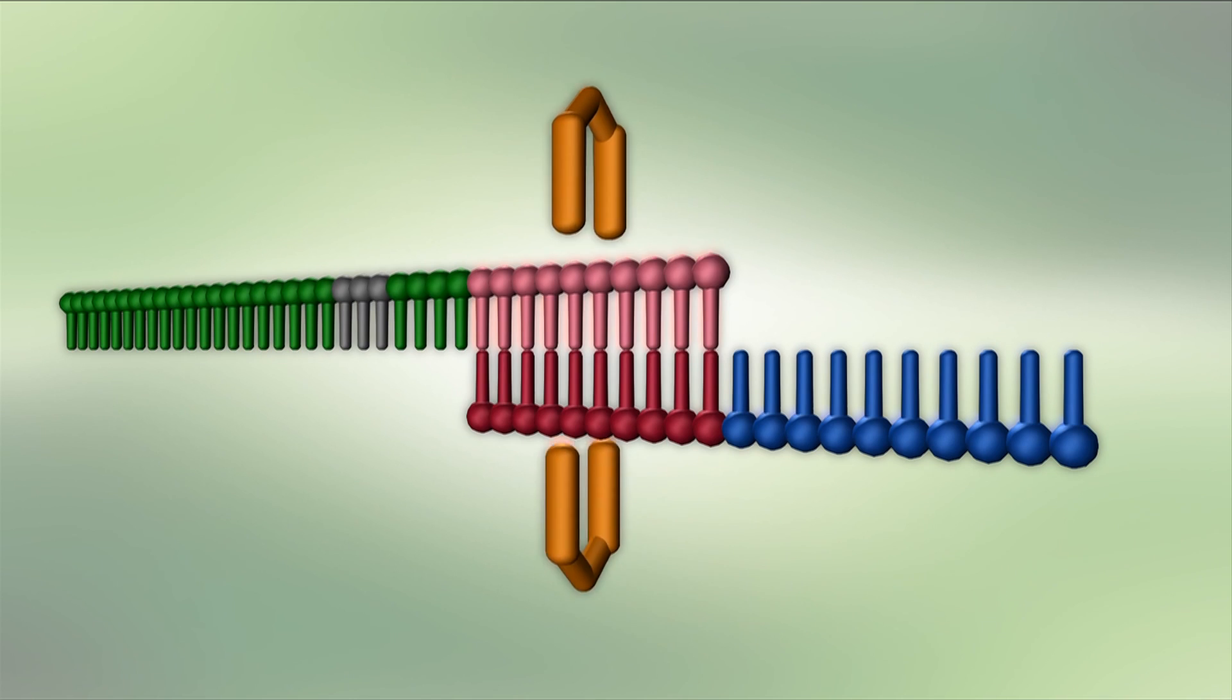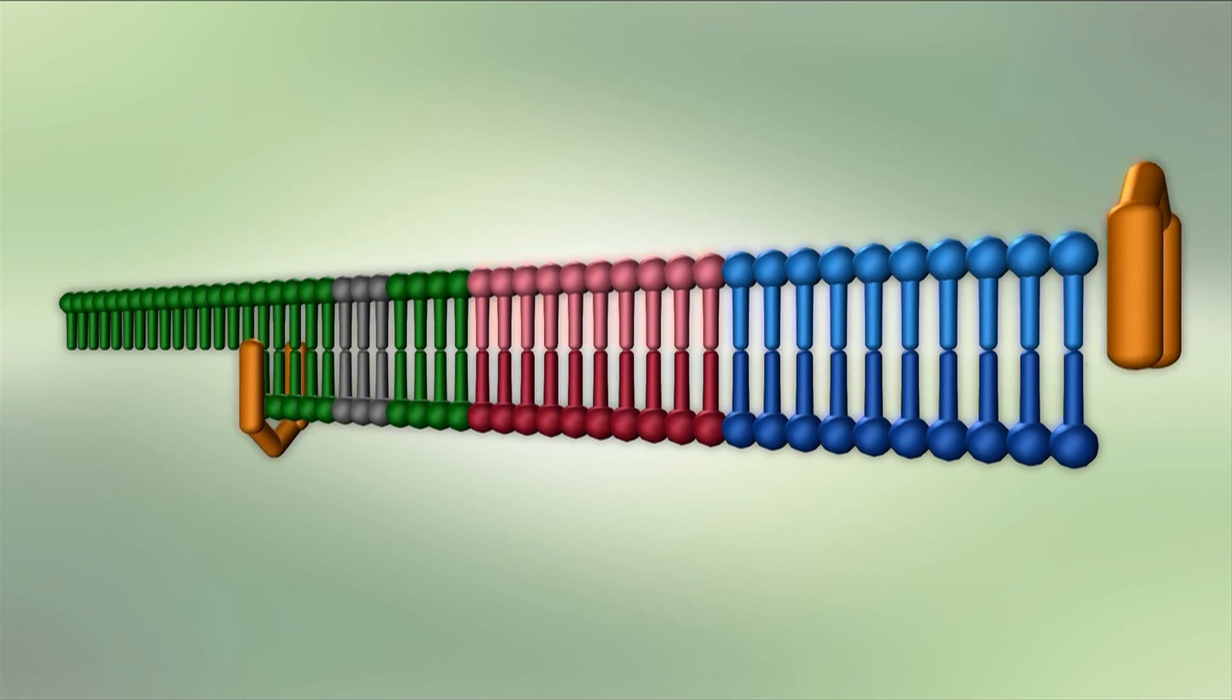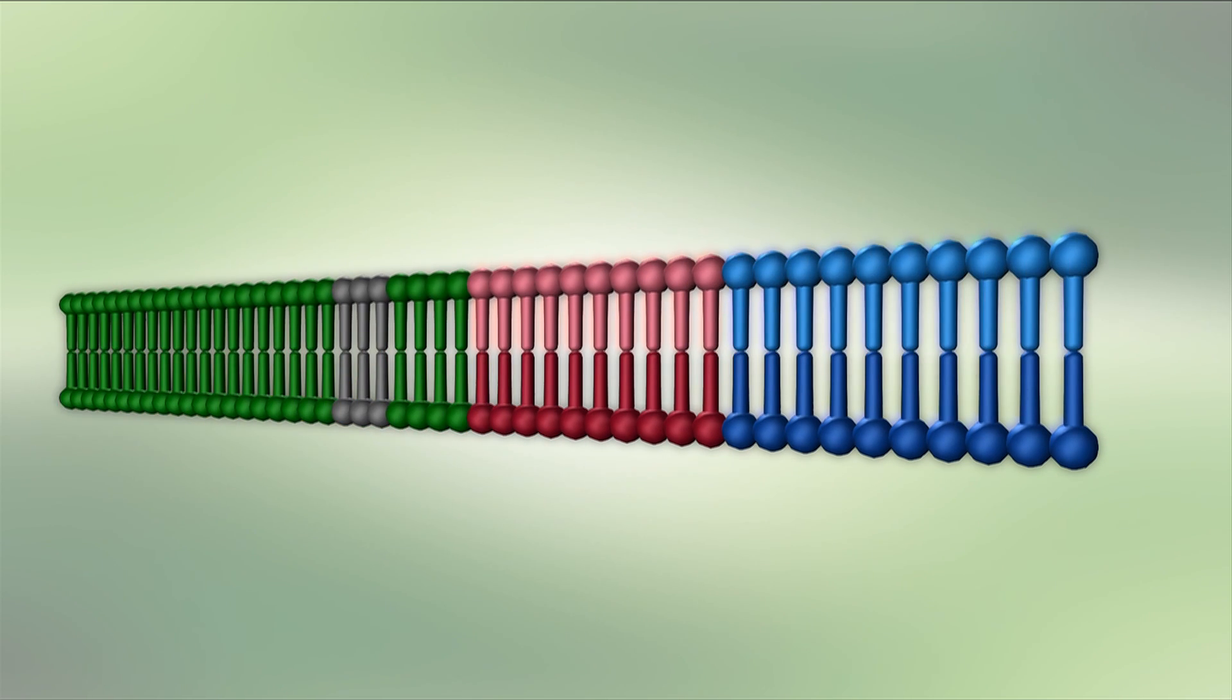Replicant 1 is bound by a second primer, elongated using a polymerase, and then cleaved by the nicking enzyme producing replicant 2.